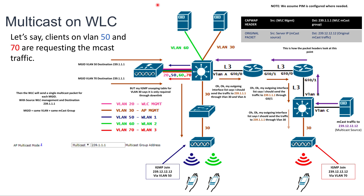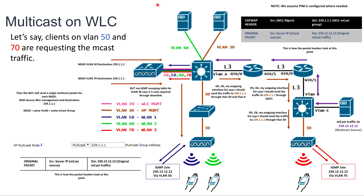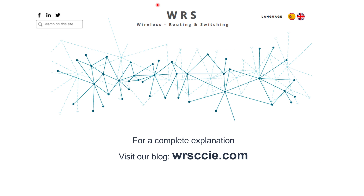Once it reaches the switch, it directs the traffic to VLAN 30 and the traffic gets to the AP. The AP strips off the CAPWAP header and forwards the original frame to the client. That's how Multicast works on wireless — the original packet has no CAPWAP header, and it's the server IP from the remote side to the original Multicast address. For more information, visit our blog at wrsccie.com.